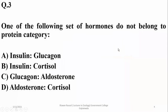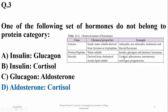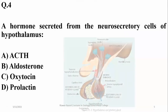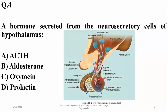Which of the following set of hormones does not belong to the protein category? Aldosterone and cortisol — they are both steroid hormones, not protein hormones. So the right option is D.